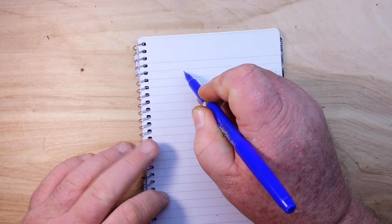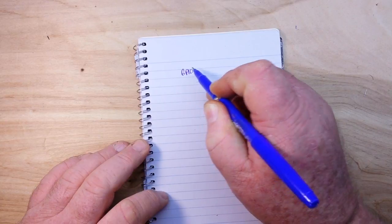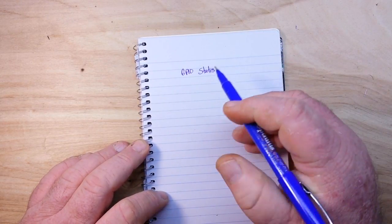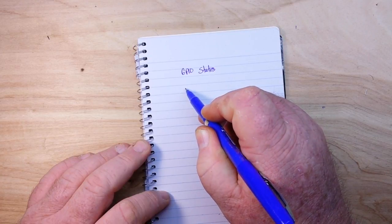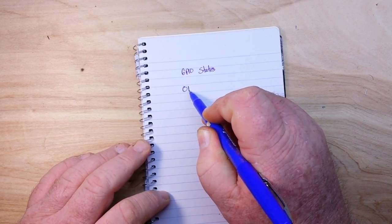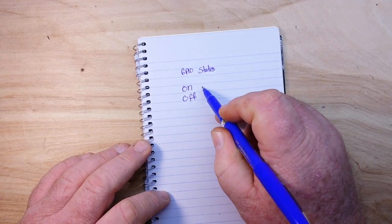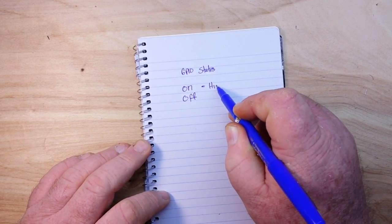So the first thing, let's talk about our GPIO states. A pin can either be on or off, which is equal to high